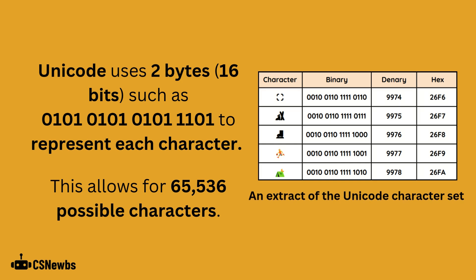Unicode uses two bytes, which is 16 bits, to represent each character. This allows for 65,536 possible characters. In the extract of the Unicode character set table here, you can see five different characters with their binary, denary, and hexadecimal equivalents, none of which you need to memorize for any exam.